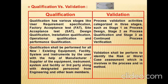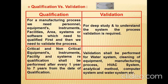Validation shall be performed to identify the risk of worst case assessment, which involves the process and the method. For a manufacturing process, we need personnel, equipment, instruments, facilities, areas, systems, or software which need to be qualified first, and then we validate the process. For a deep study and understanding of the system, process validation requires both critical and non-critical equipment, instruments, facilities, and systems.